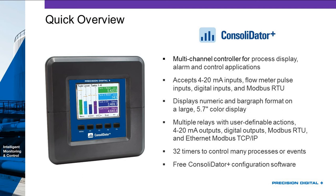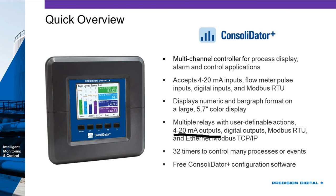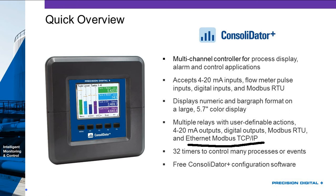It has a numeric bar graph format on a large 5.7-inch color display. It can have multiple relays with all sorts of user-defined actions — from simple alarming to pump alternation control to being triggered at certain times and dates. You can get 4-20mA outputs, all isolated, and digital outputs. You can provide that information to your DCS via Modbus. And I'm proud to say this is our first product with Ethernet Modbus TCP/IP — so you have Modbus over Ethernet, and if you want to connect it to your Ethernet lines and access it from anywhere in the world, you can.